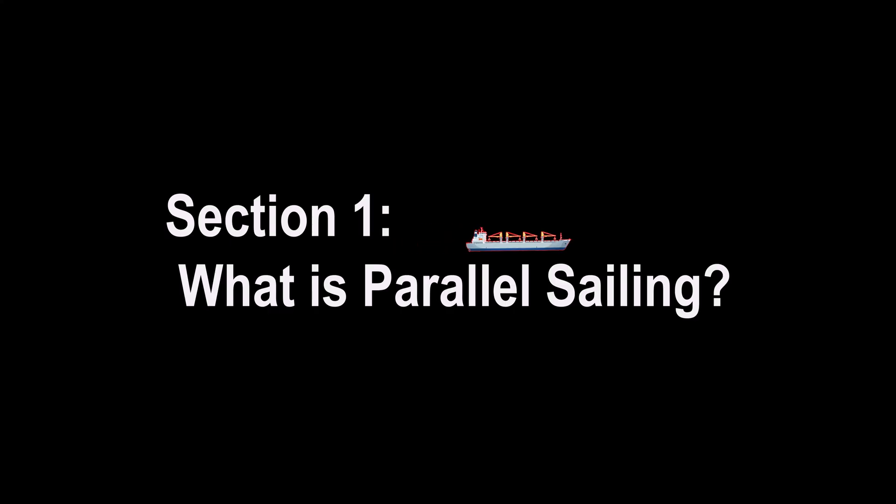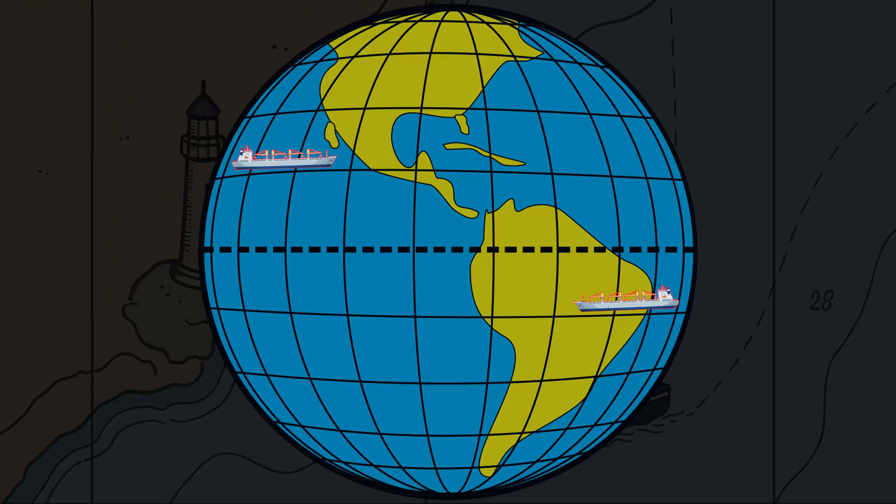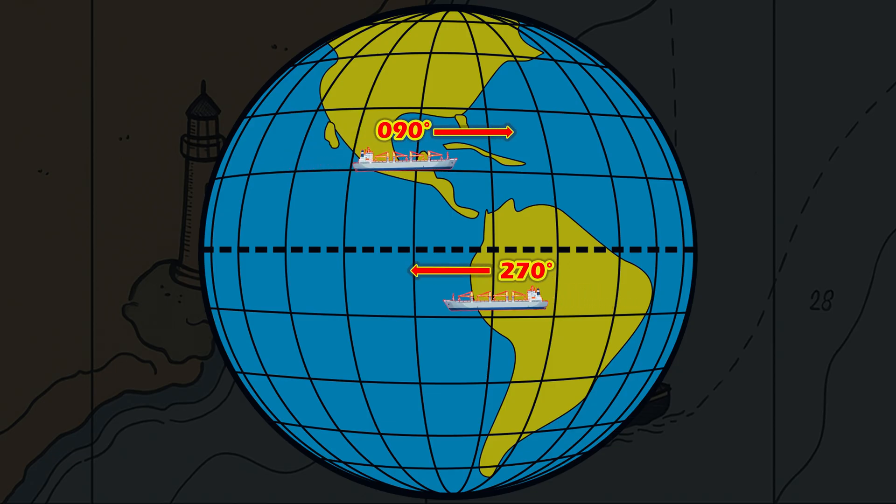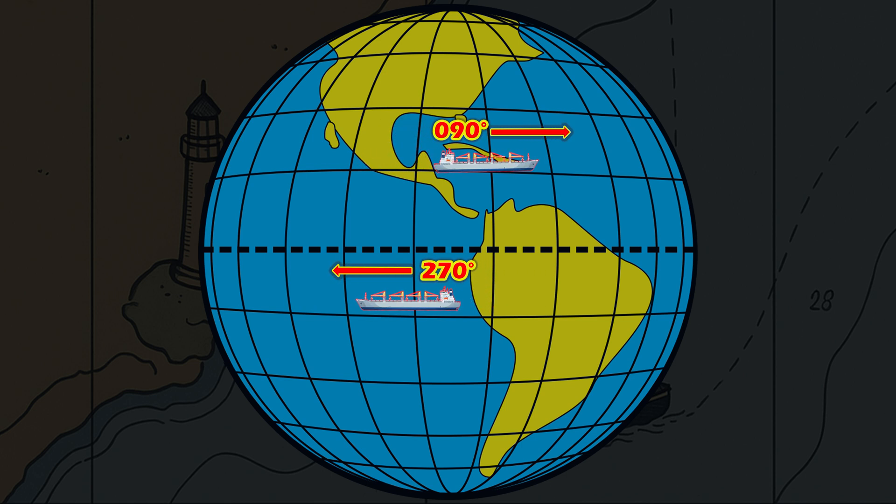Section 1: What is parallel sailing? Parallel sailing is used when a ship is travelling due east or due west on a course of 090 degrees or 270 degrees. In this type of sailing, the latitude stays the same because the vessel is following a parallel of latitude.